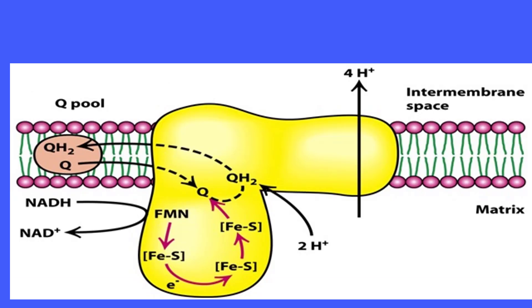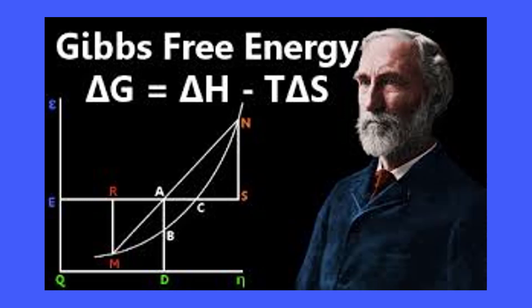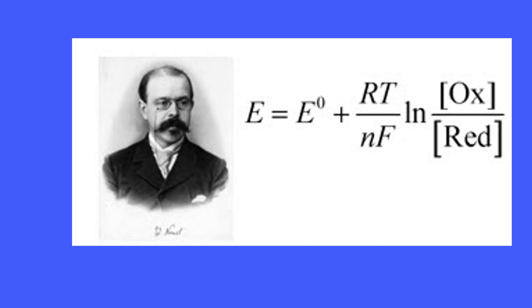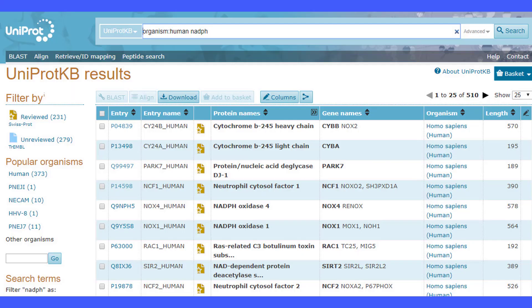NADH transfers a hydride ion, leaving behind NAD+. The relative concentrations of the two forms of each coenzyme determines their chemical potential, or delta G, or their electrical potential in the case of NADH and NADPH.